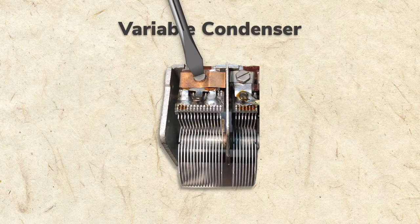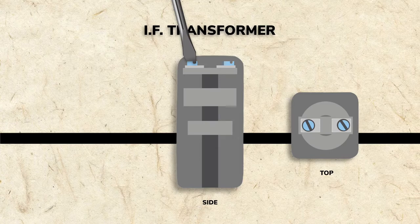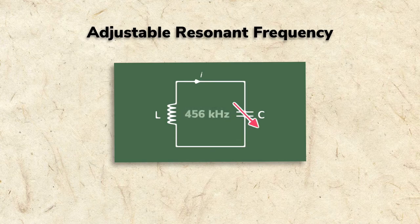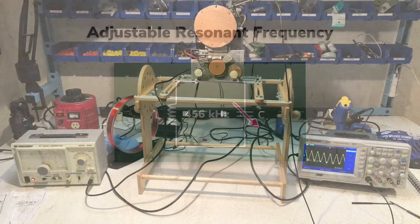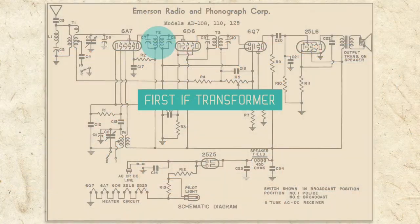Just as with the variable condenser, the IF transformer has variable trimmer capacitors. These are to fine-tune the primary and secondary, so the transformer resonates at exactly 456 kHz. Fine-tuning is part of the alignment procedure, which we'll discuss in a later segment.